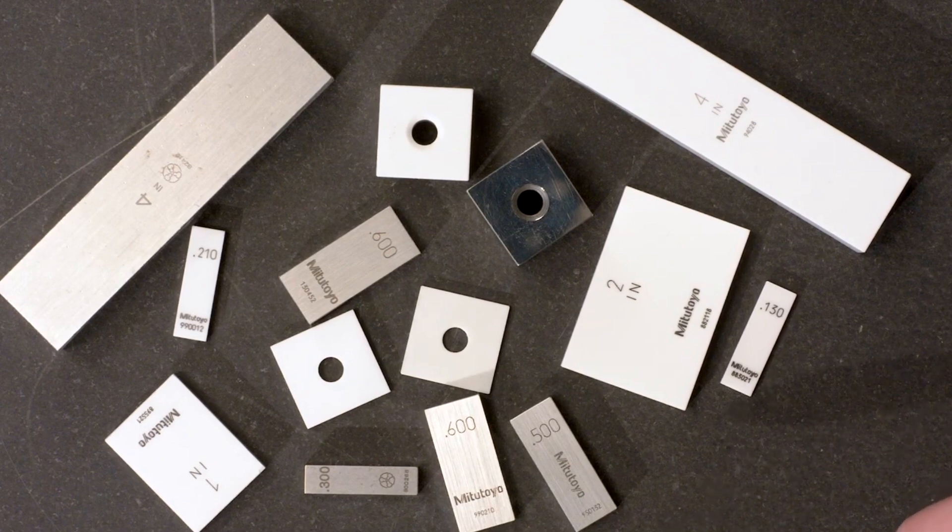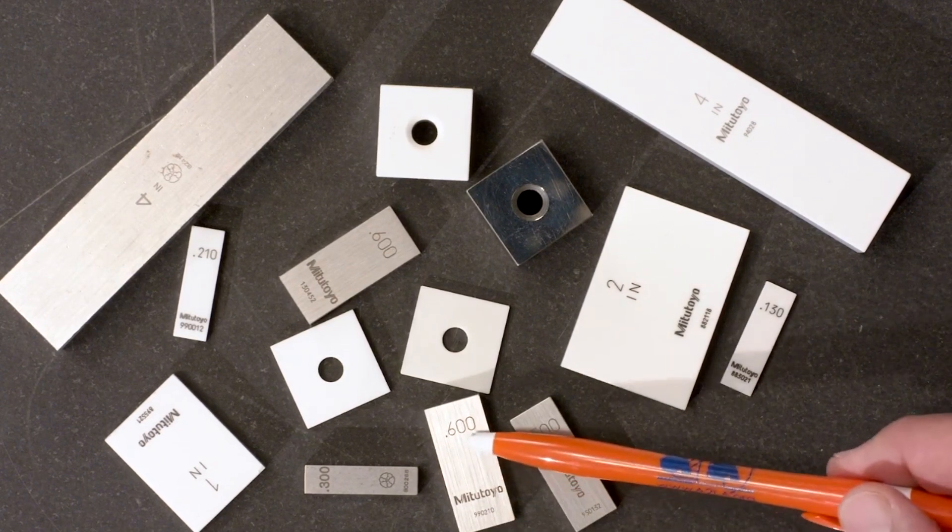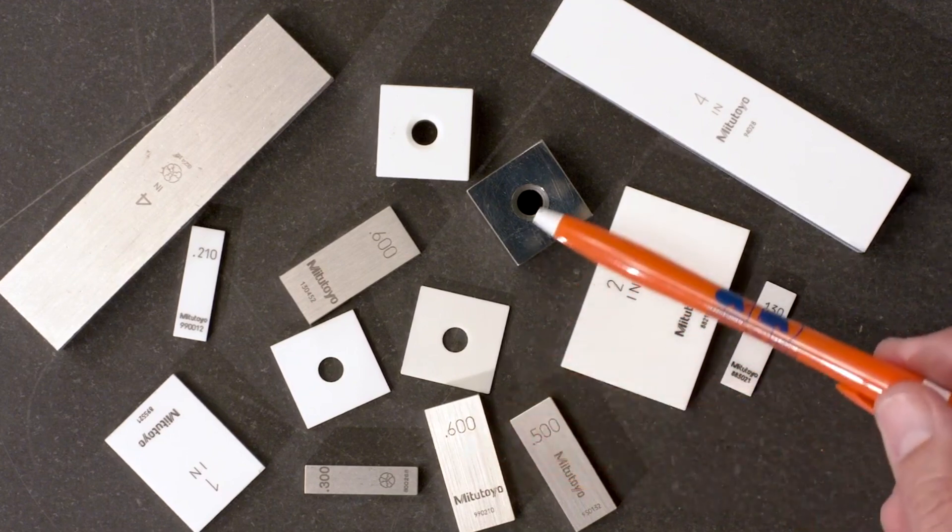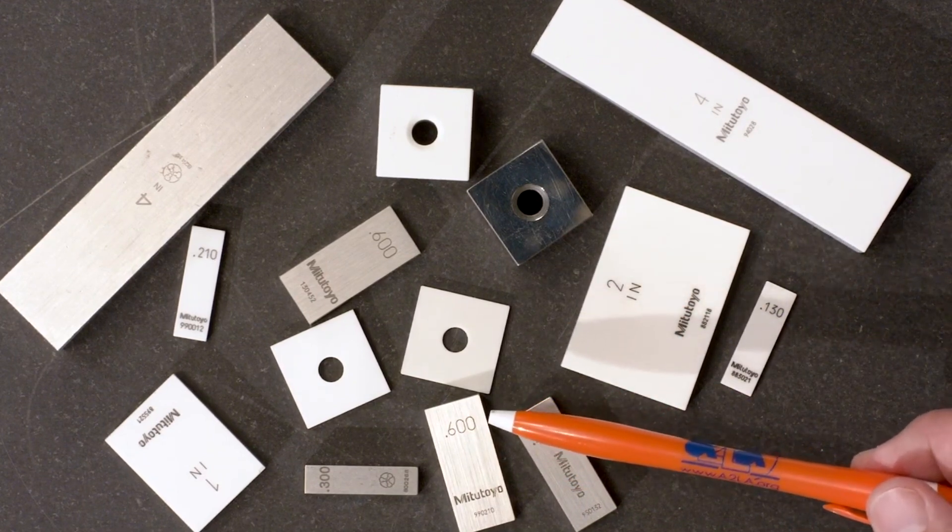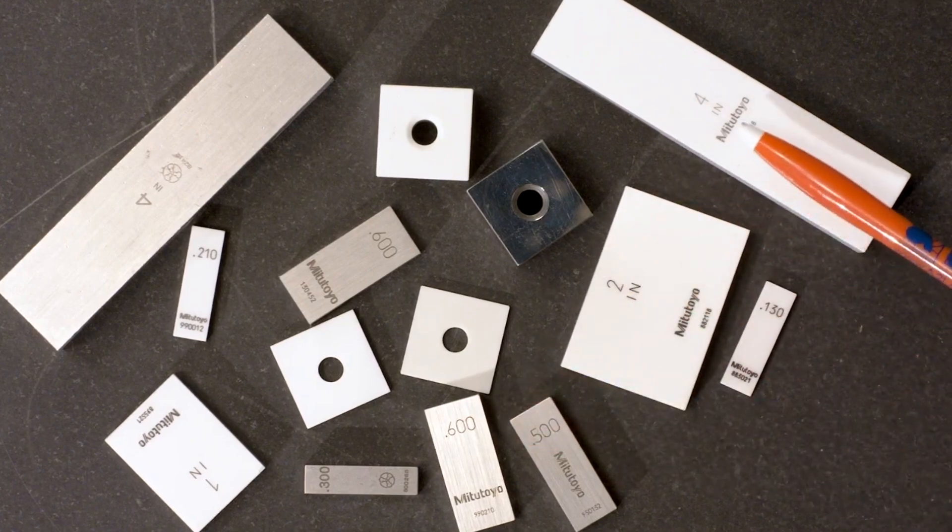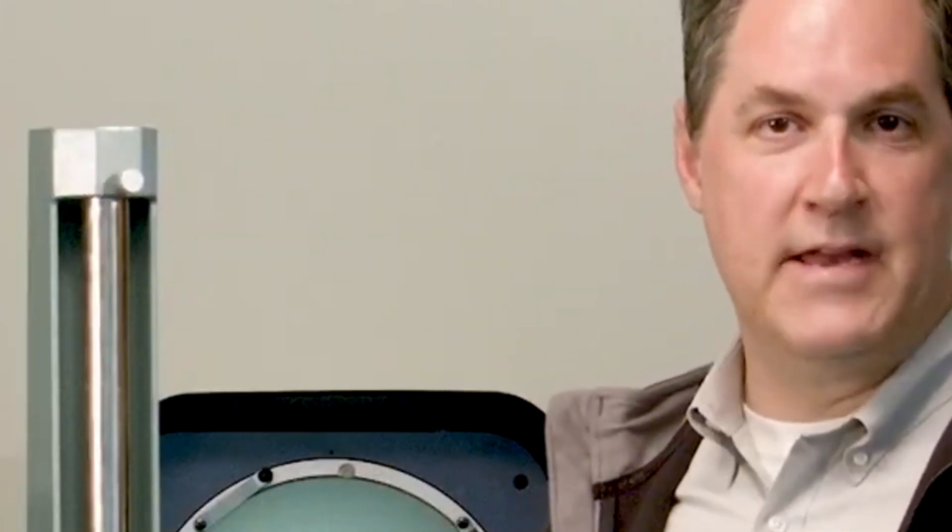The most common material for Gauge Blocks is steel, mostly because the price is quite attractive. Other standard materials include carbide and ceramics.